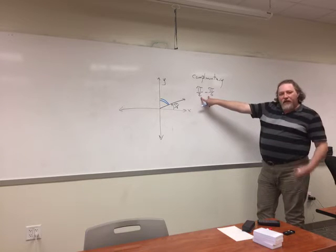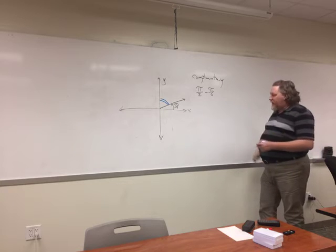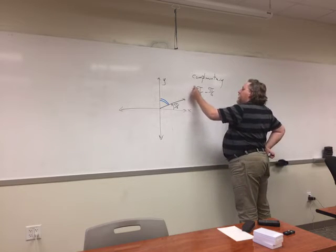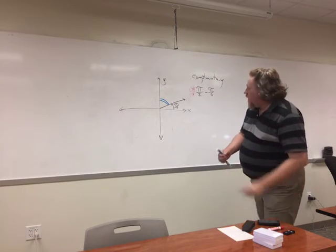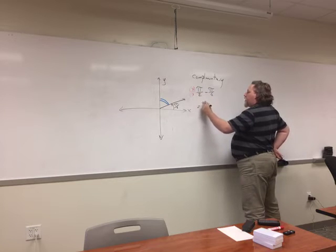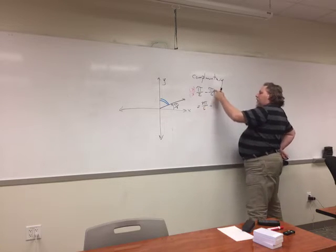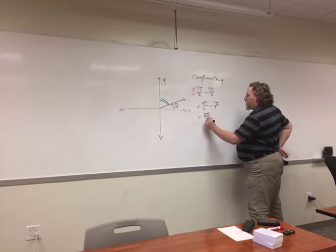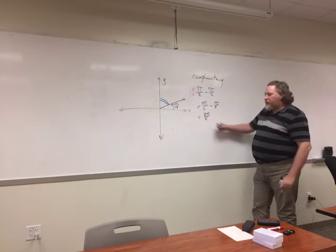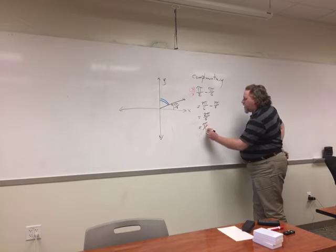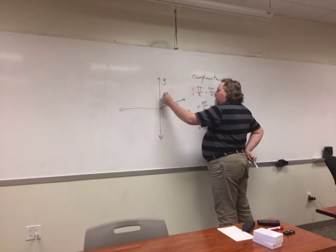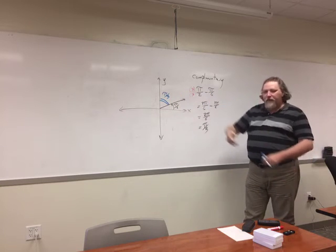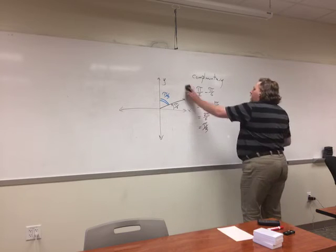Multiplying top and bottom by three: three pi over six minus one pi over six gives two pi over six. That fraction simplifies — two over six reduces to one third — so the complement is pi over three. Pi over three is the complement to pi over six; the two together make a right angle of pi over two.